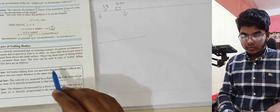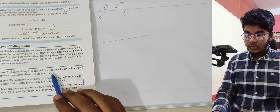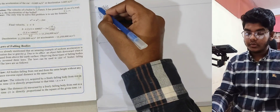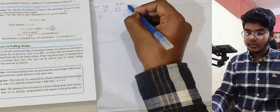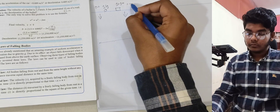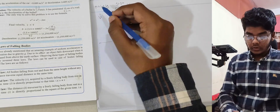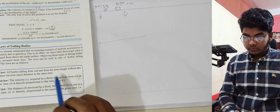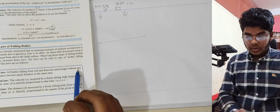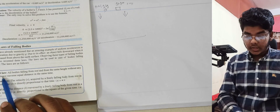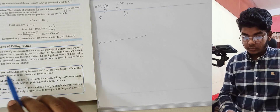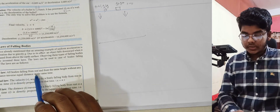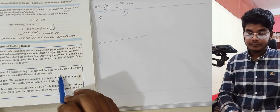All bodies falling from rest — initial velocity is zero meters per second — from the same height, without any resistance, will traverse equal distance in the same time.